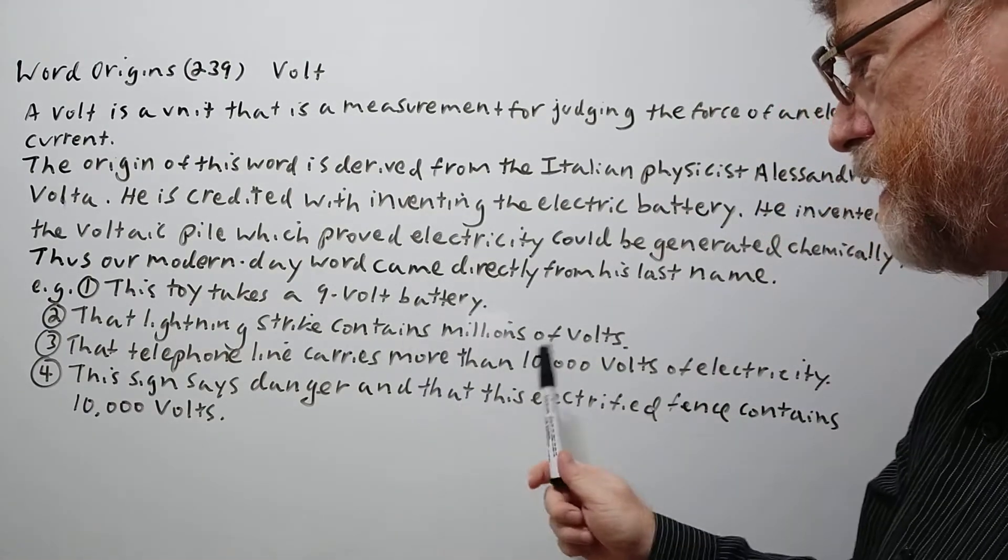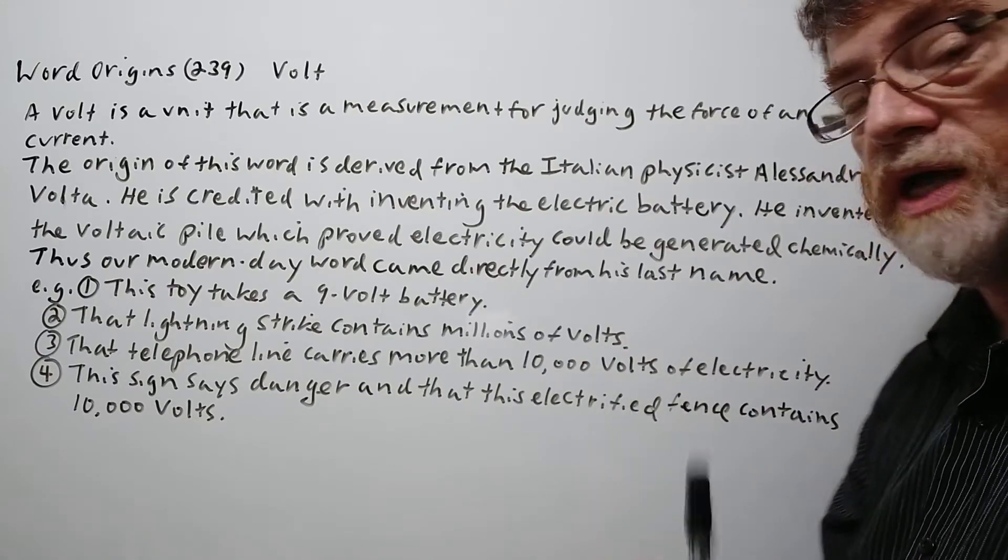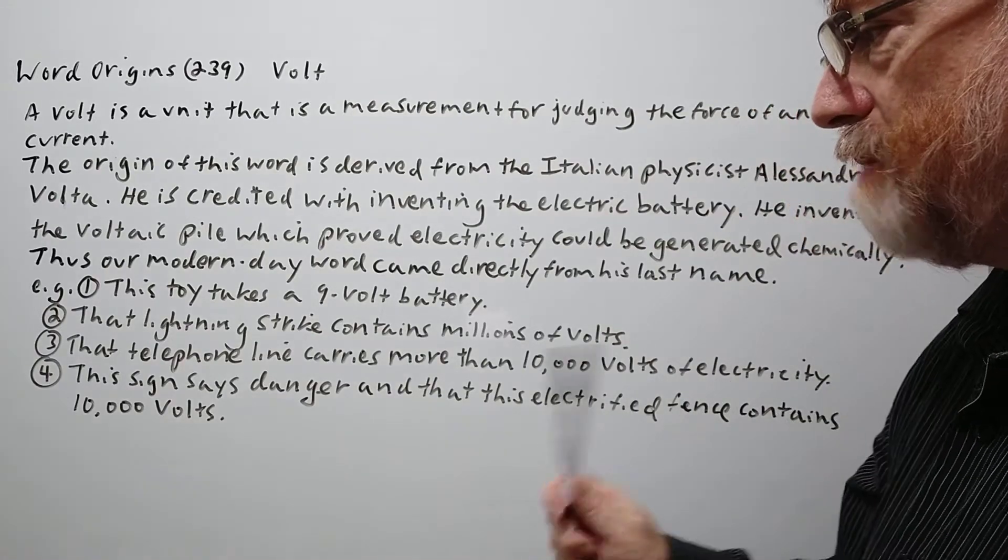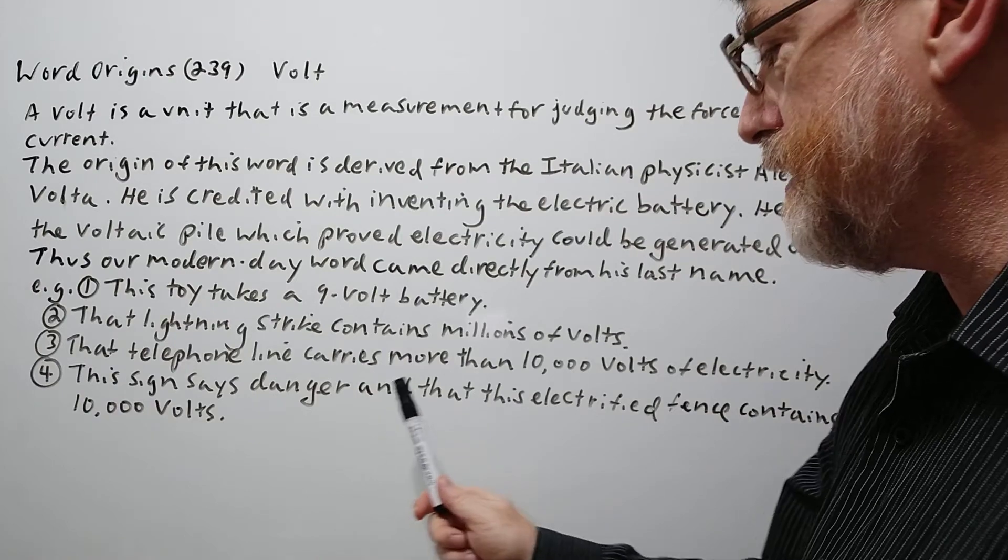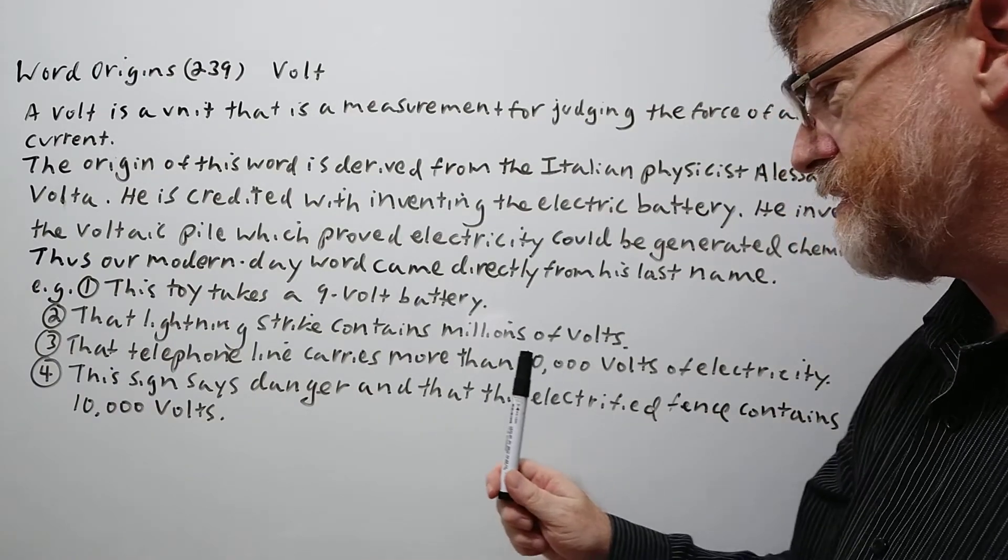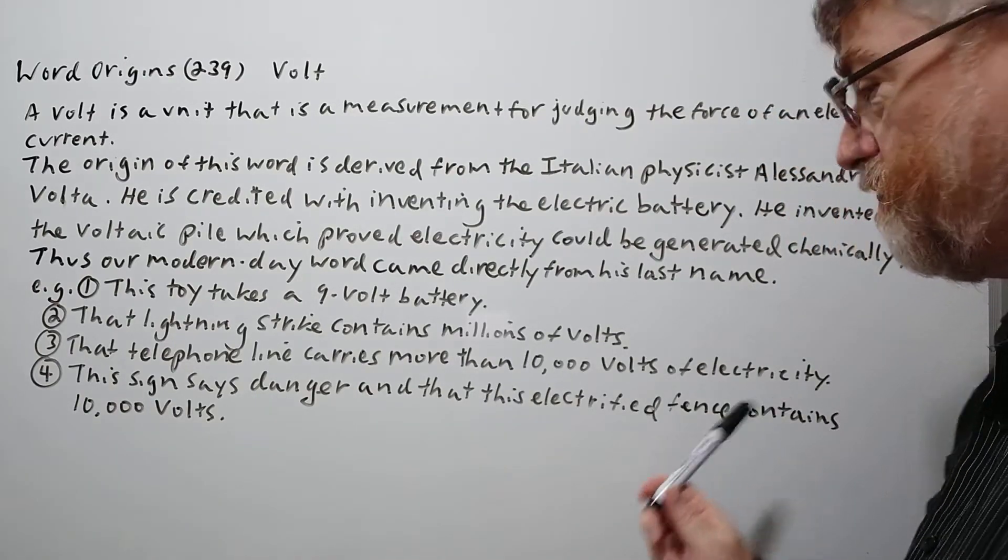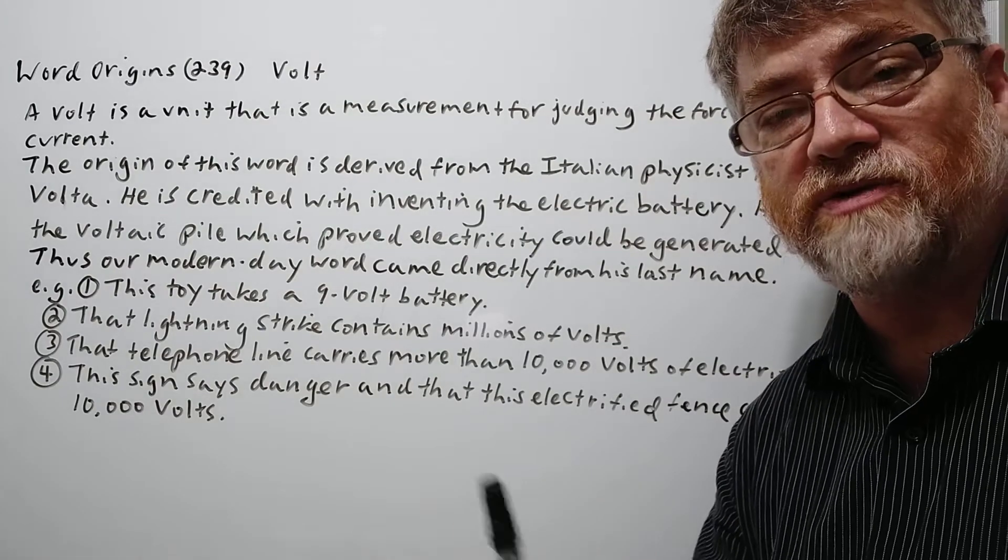Number three: That telephone line carries more than 10,000 volts of electricity. And number four: This sign says danger and that this electrified fence contains 10,000 volts.